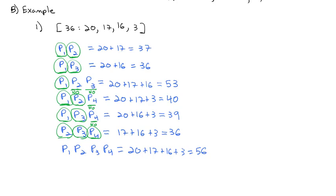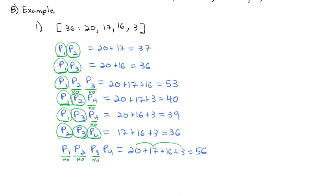In the last coalition of all four players: removing Player 1 leaves Players 2, 3, and 4, which totals 36 votes — so Player 1 is not critical. Removing Player 2 leaves 20 plus 16 plus 3, which is 39 — quota is met, so Player 2 is not critical. Removing Player 3 leaves 20 plus 17 plus 3, which is 40 — so Player 3 is not needed. Removing Player 4 leaves 20 plus 17 plus 16, which is well over quota, so Player 4 is not needed either.